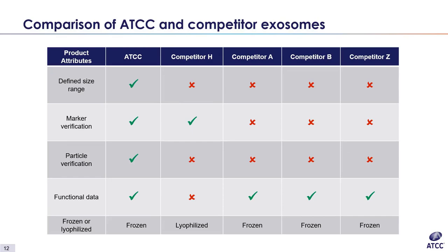This table shows a comparison of ATCC exosomes with competitor exosomes, emphasizing what we define in each vial. Competitors H, A, B, and Z do not define exact size range. Competitors H, A, B, and Z do not define number of particles per vial. Competitors A, B, and Z do not perform marker verification for each lot. Lastly, competitor H does not provide any functional data for their exosomes. All these attributes separate ATCC exosomes from current competitors.